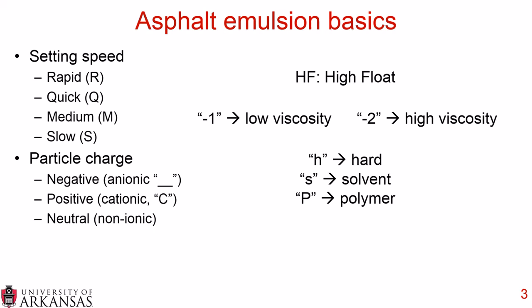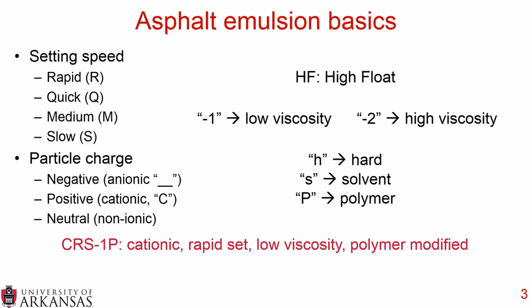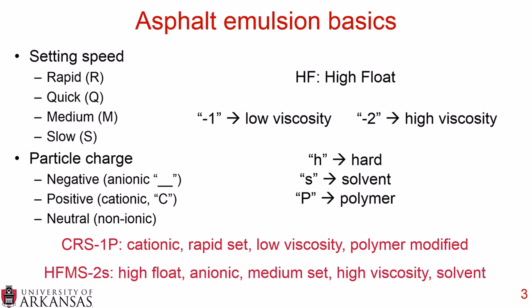A capital P indicates that the asphalt emulsion contains a polymer. So a CRS-1P is a cationic, rapid-set, low viscosity, polymer-modified asphalt emulsion. Whereas an HF-MS-2S is a high float, anionic, medium-set, high viscosity, solvent-bearing emulsion.